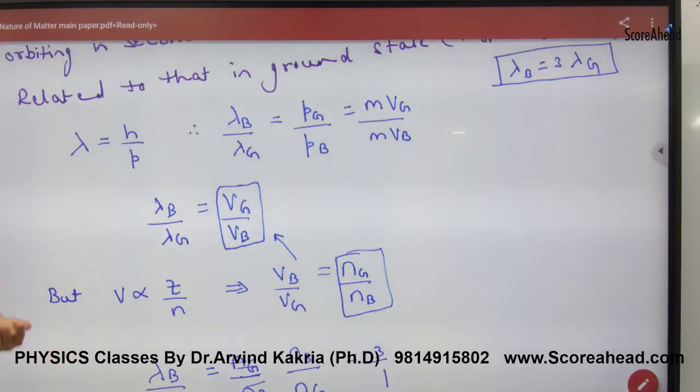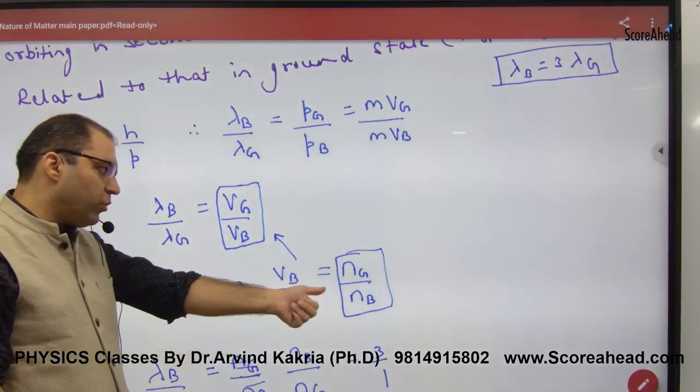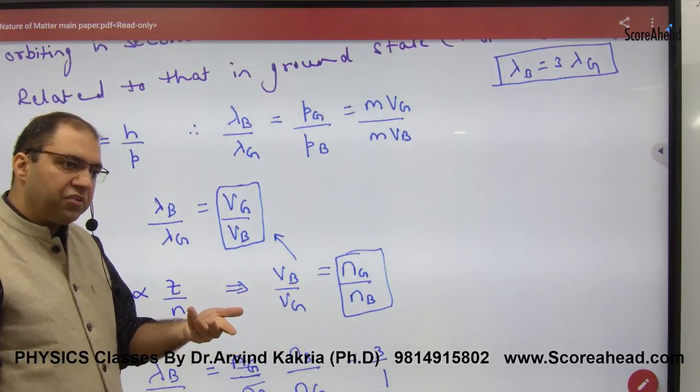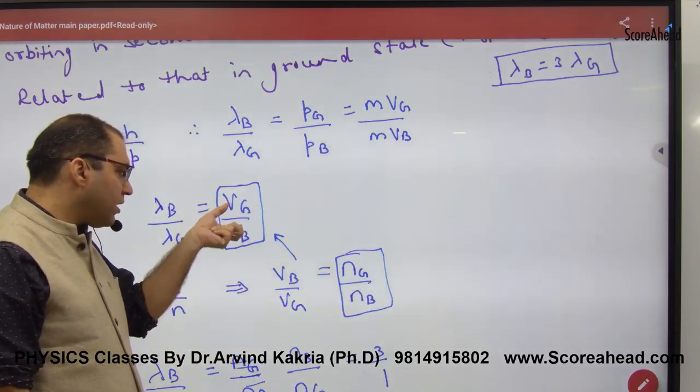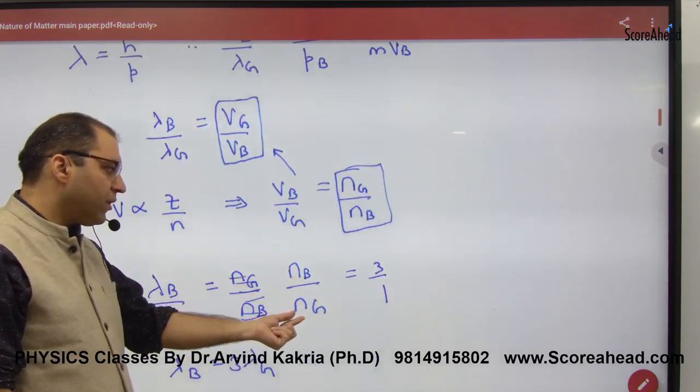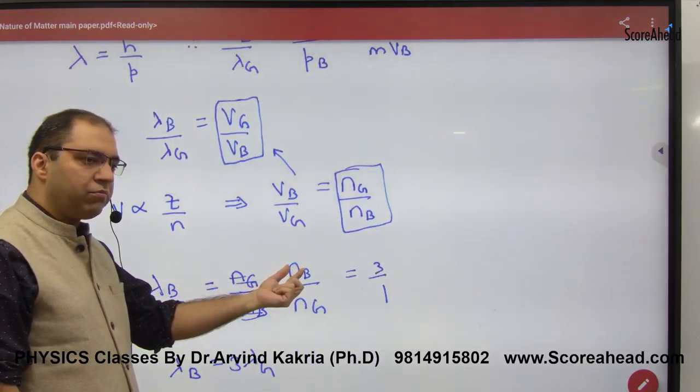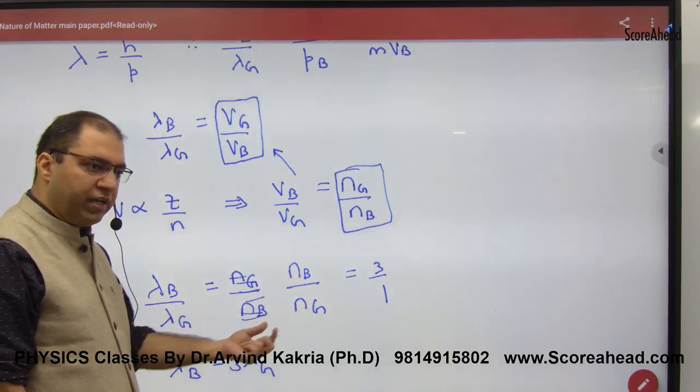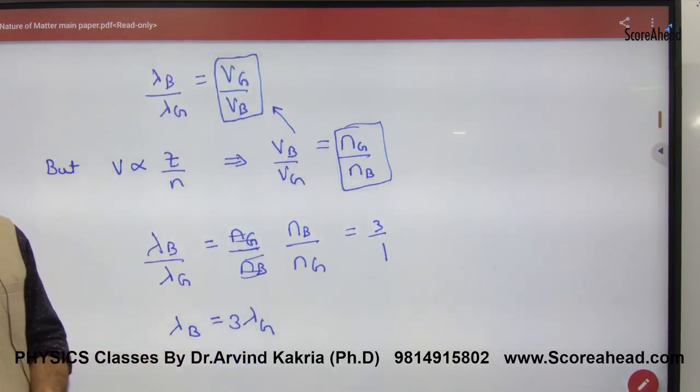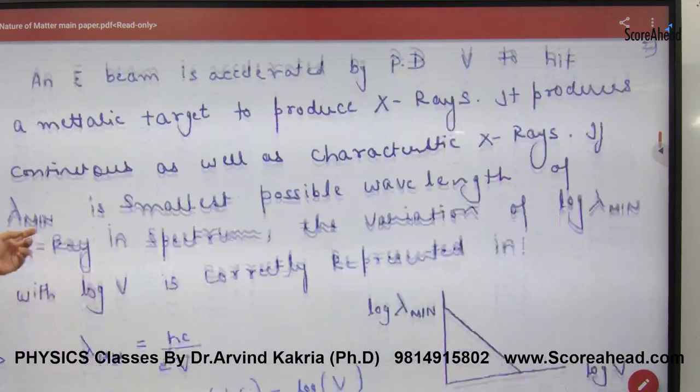The velocity is inversely proportional to n. So V_B by V_G equals n_G by n_B. This becomes n_B by n_G. The n value is 3, and in ground state 1. So which ratio will be lambda? This type of question is given.